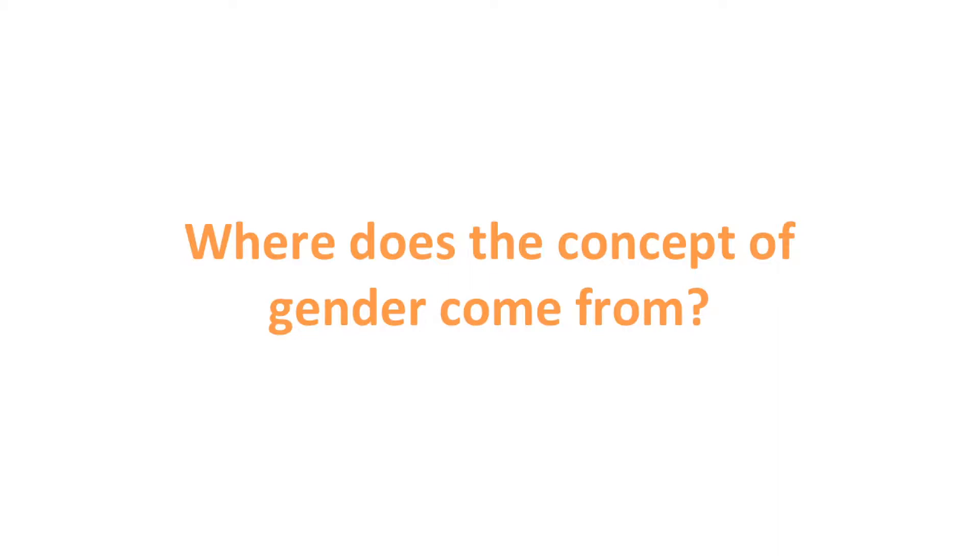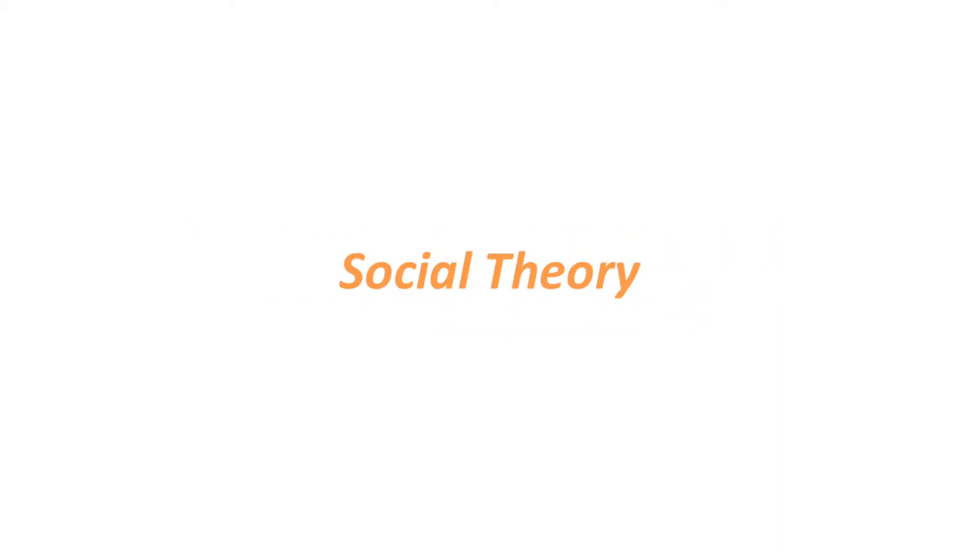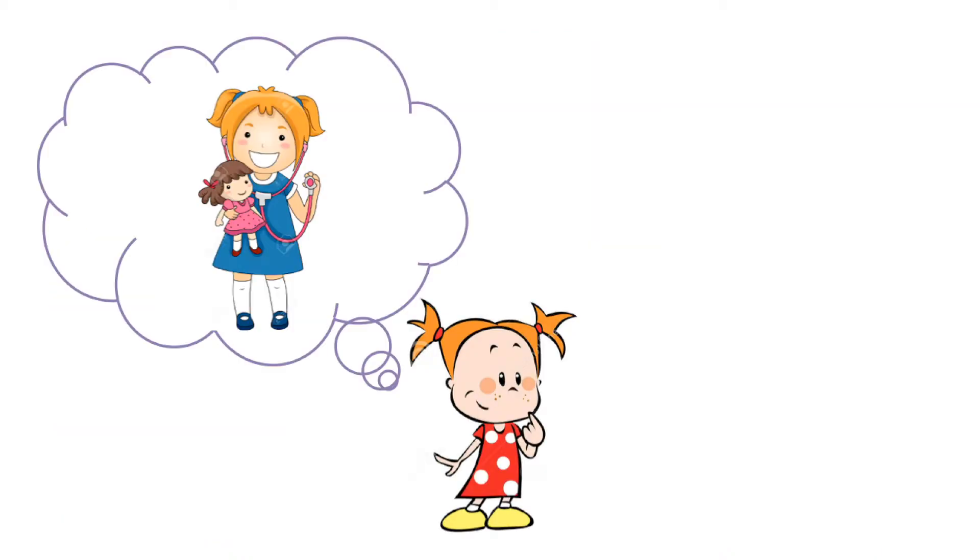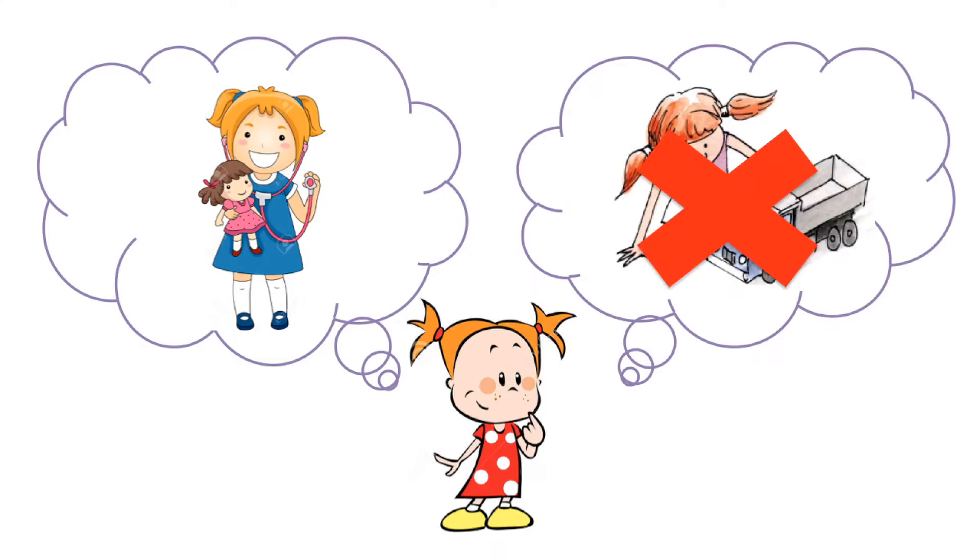And where does the concept of gender come from? According to the social theory, children get rewards and punishments for appropriate and inappropriate behavior. Children get cues from their environment about how they should behave. Little girls learn how to be girls and boys learn how to be boys. And they learn that it is important to conform to these gender roles set by their society.